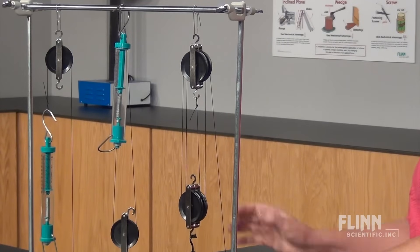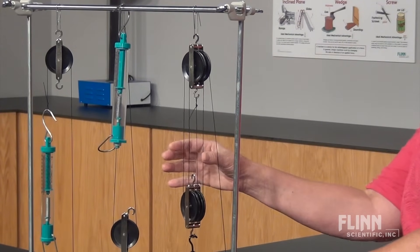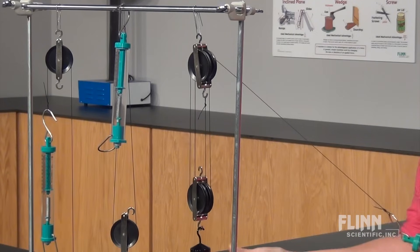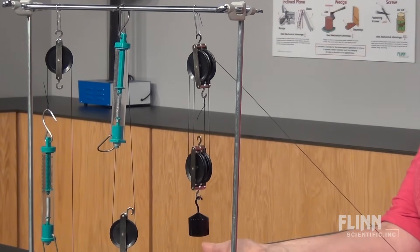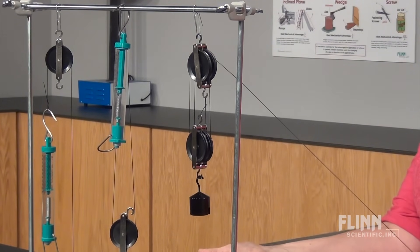This system may look like it has five supporting ropes, but we can see that only four sections are involved with supporting the load, and this section is simply changing the direction of the force. So the input force is multiplied four times for a mechanical advantage of four.